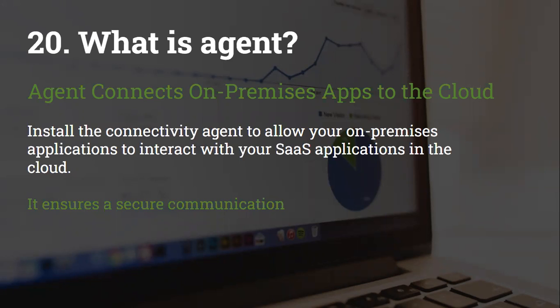Question 20: What is an Agent? An agent connects on-premises apps to the cloud. You install the connectivity agent to allow your on-premises applications to interact with your SaaS applications in the cloud. It ensures secure communication. In simple terms, when you want to send data from an on-premises application to a cloud application, you install and configure the agent on your on-premises side so it can connect to the cloud. The agent also takes care of security.